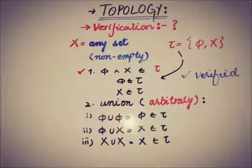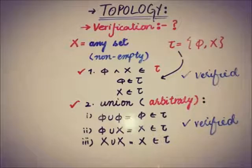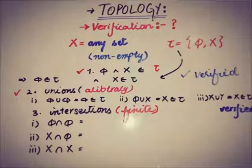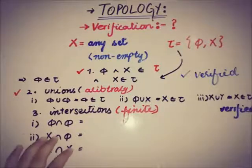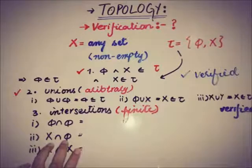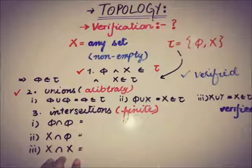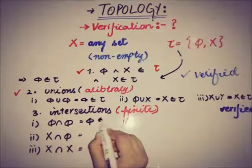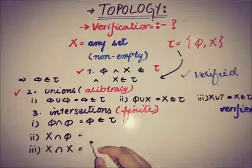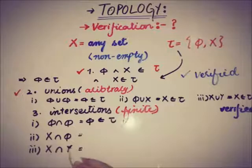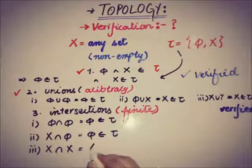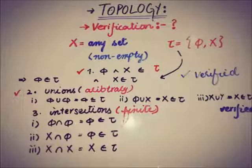Now we have to verify the third condition about the intersection of finite members. There are only three possibilities for intersection: the empty set intersection with itself gives phi, which belongs to tau; the empty set intersection with X gives phi, which also belongs to tau; and X intersection with X gives X, which also belongs to tau.